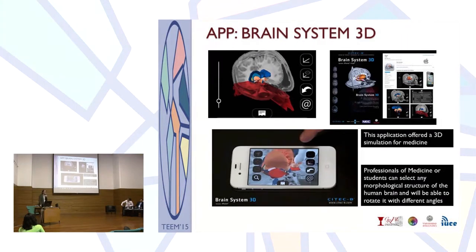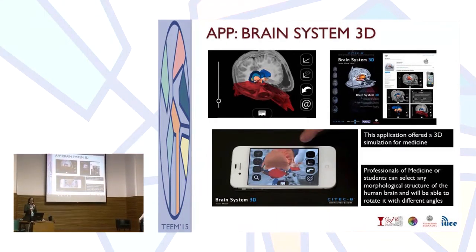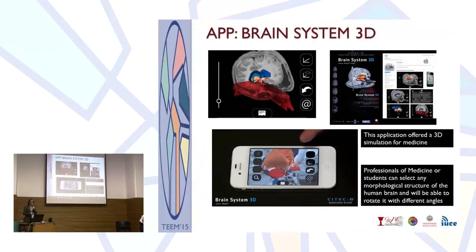The app that we used to validate during the session was called Brain System 3D. This app gives you the opportunity to see the different structures of the human brain, rotate and explore the different parts, fix the image on screen, and select specific parts of it. This is the app we used to validate during the session.